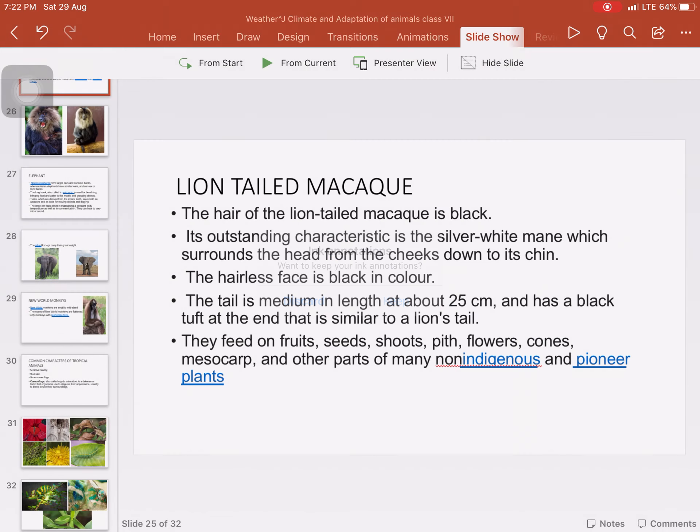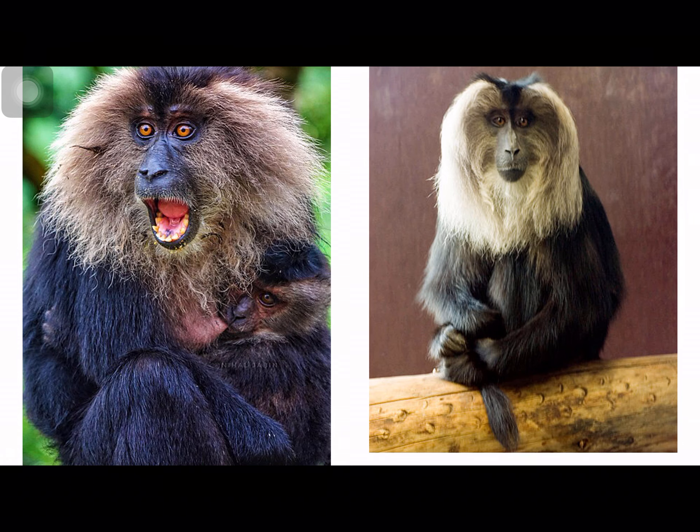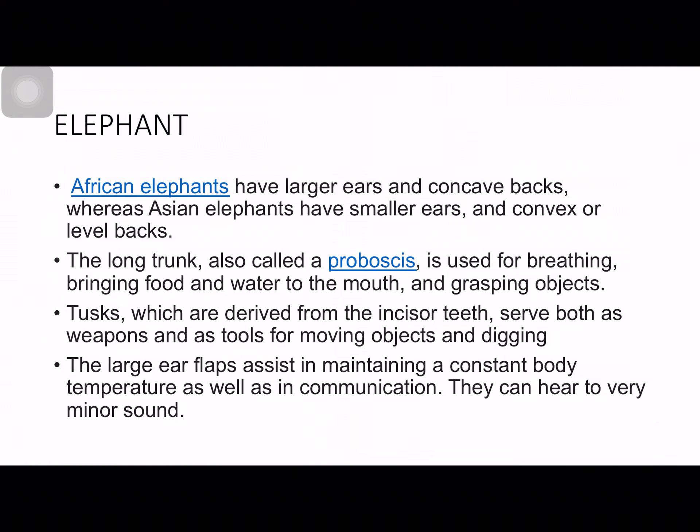Now let's compare the African elephant and the Indian elephant. The African elephant has larger ears with a concave surface. The Indian elephant, found in Kerala and South India, has smaller ears which curve inward. The incisors of the Indian elephant are smaller, while the African elephant has large tusks — called ivory — that project outward. Ivory is very costly. The tusks are derived from the incisors.